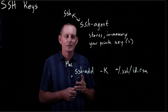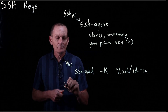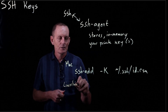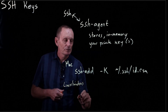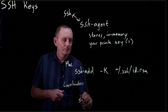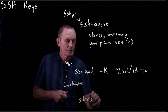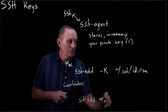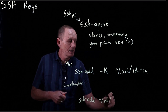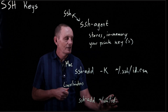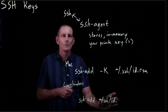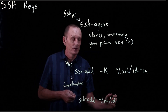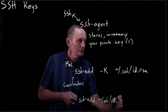For Linux or Windows, you won't use the minus K, so you'll just use ssh-add. You don't have to use the last parameter because the default is that's where your private key is.